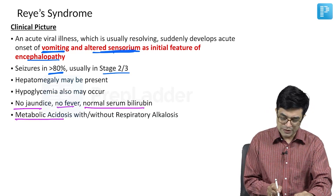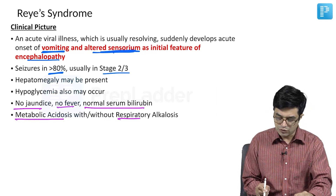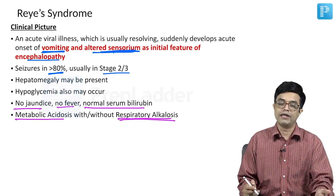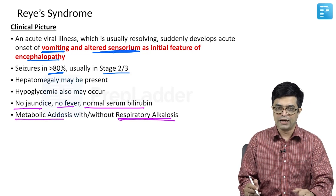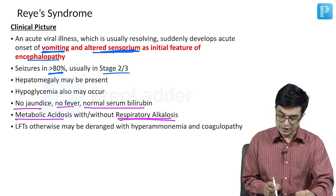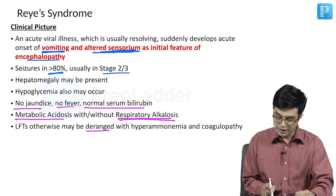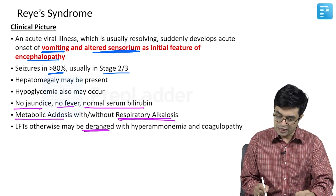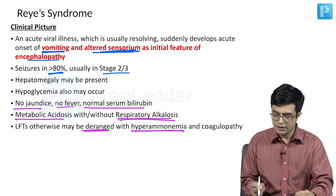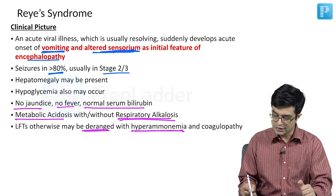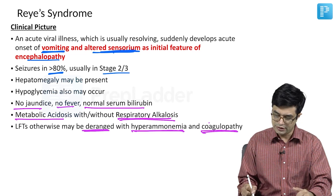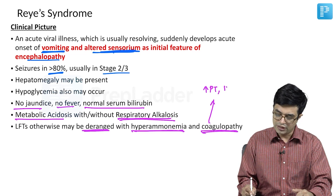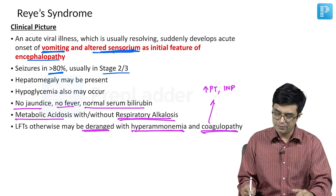Metabolic acidosis may happen with or without respiratory alkalosis due to hyperventilation as a compensatory mechanism, and liver function tests otherwise may be deranged. There will be hyperammonemia — that is, increased blood ammonia levels — and coagulopathy, which will manifest in the form of prolonged PT and prolonged INR in the patient.